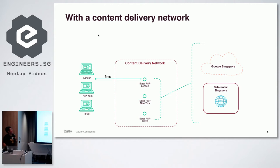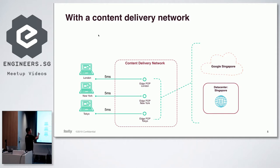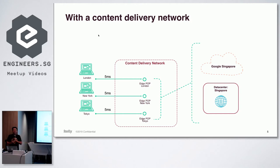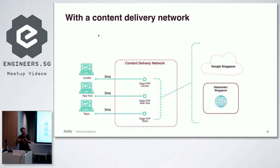So how does a Content Delivery Network help? You deploy POPs around the internet so they are close to your users. Typically, if there's a POP within London, it's connected less than five milliseconds away. What you want from a CDN is to cache as much content as possible so that your end users do not need to come back to your origin server, because it just takes too long.